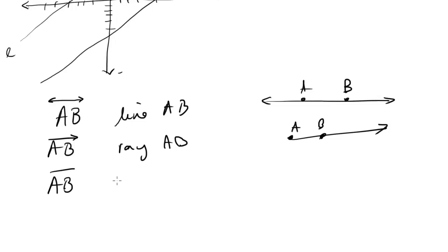How about AB with a regular line? Well, this is segment AB, and this is just two terminating points, A and B, that define that segment.